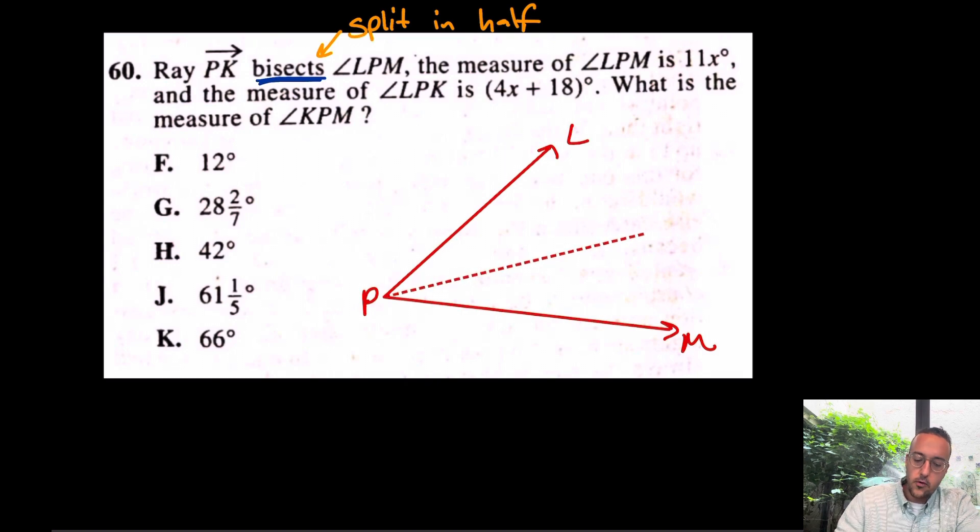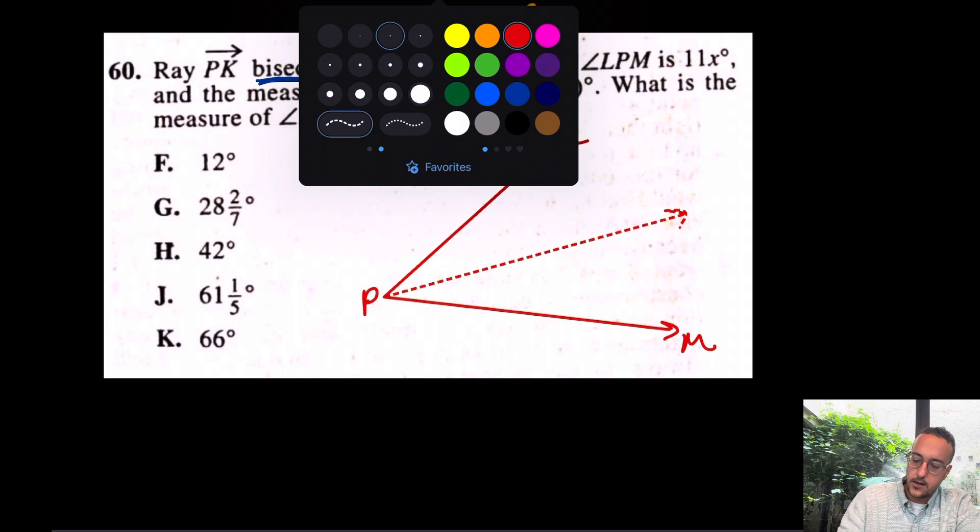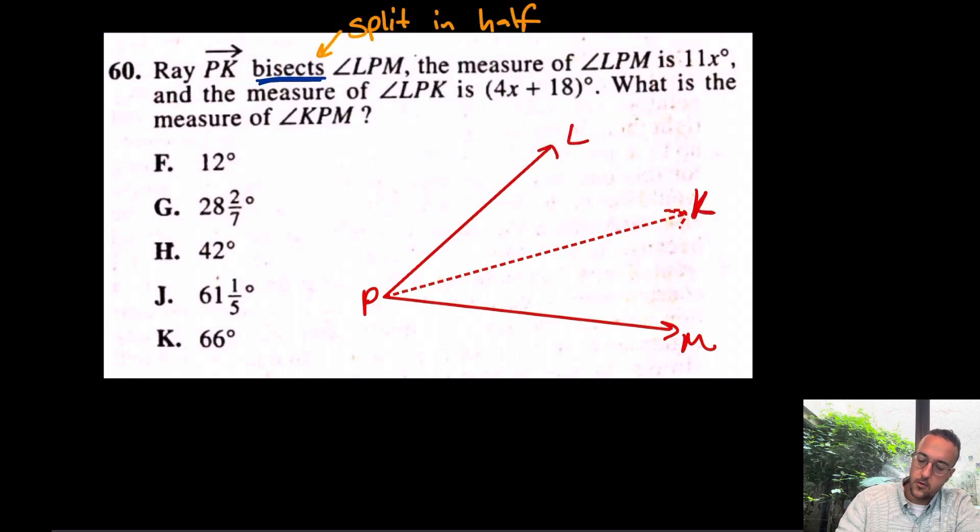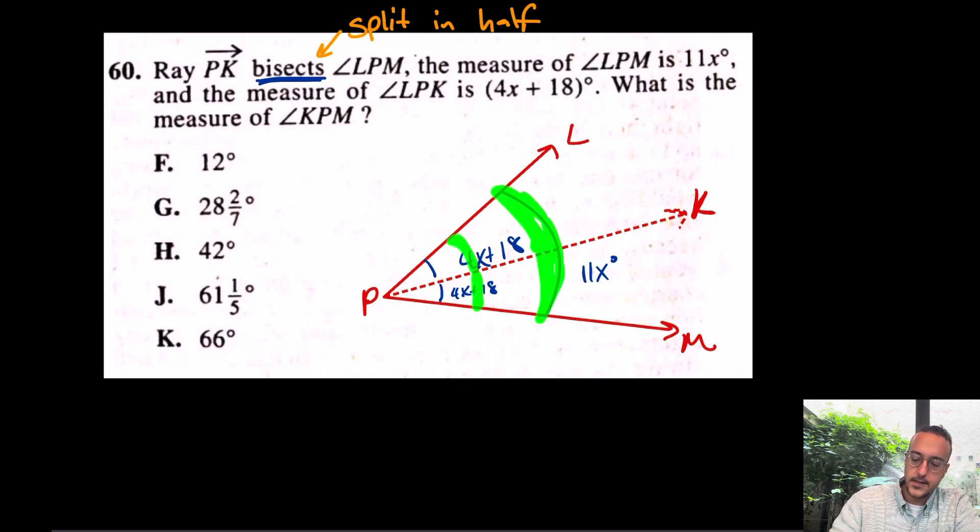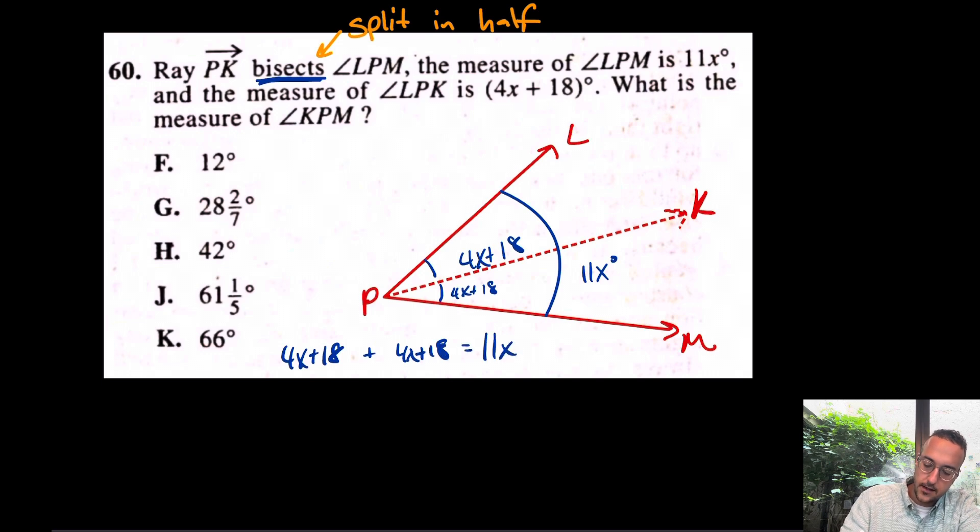It does say that ray PK bisects this angle. So we could call this angle here, really, this ray, ray PK. Again, this is our ray PK bisecting this angle. From here, we're about to be done. Really, we have LPK is 4X plus 18. But the whole thing is equal to 11X. I'll say that again. The whole angle here, like this, is equal to 11X degrees. Well, the genius behind this question is to understand that if this is 4X plus 18, then this is also 4X plus 18. And when you add those together, in other words, if you can add this angle and this angle together and set that equal to 11X, that's our game plan. Really, we have 4X plus 18 plus 4X plus 18 is equal to 11X.